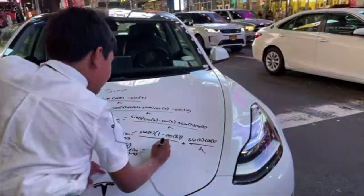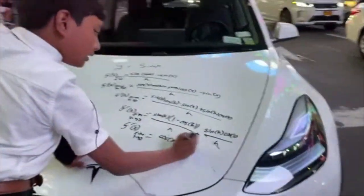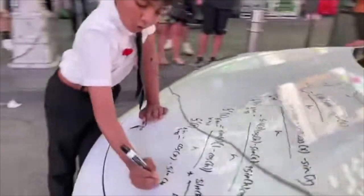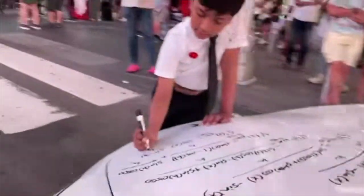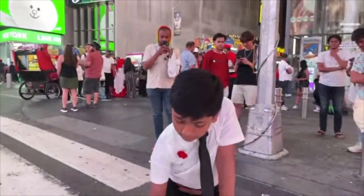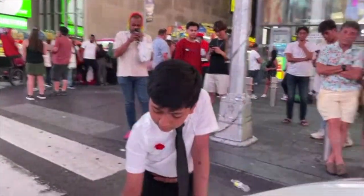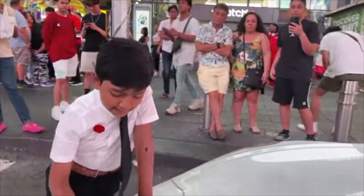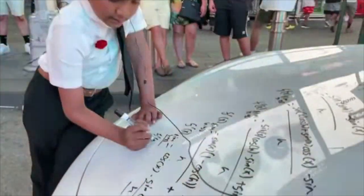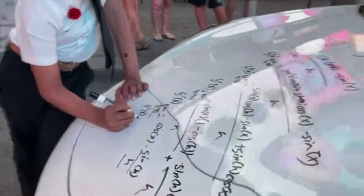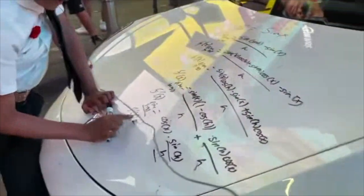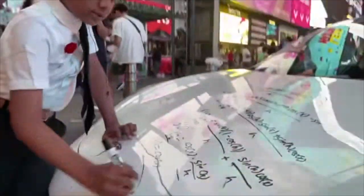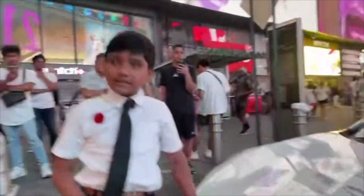Which is the same thing as cosine of x times sine of h over h. And taking the limit of sine of h over h as h approaches zero is going to be one. So you get f prime of x equals cosine of x times one — so, cosine of x. That's it.